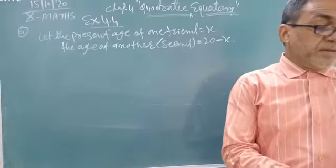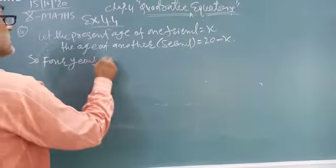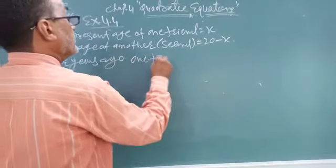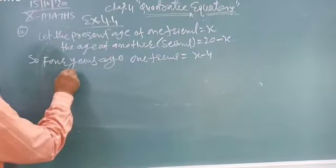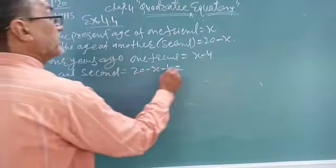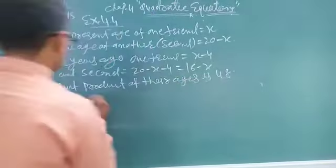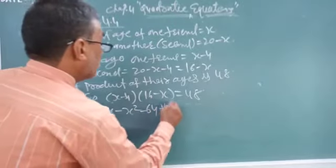Now what is the product before 4 years ago? 4 years ago, one friend, the first one, x minus 4. And second number, 20 minus x minus 4 means 16 minus x. What is the product given? Product is given 48. Therefore, product of their age is 48. So x minus 4 or 16 minus x is equal to 48.